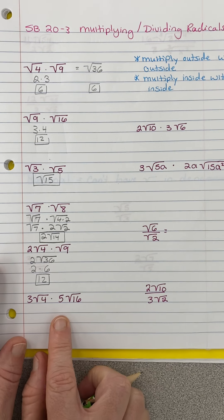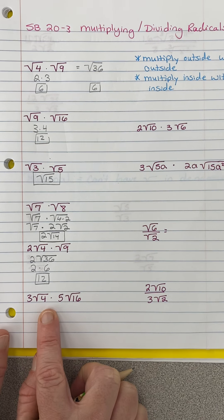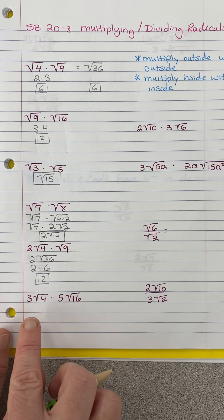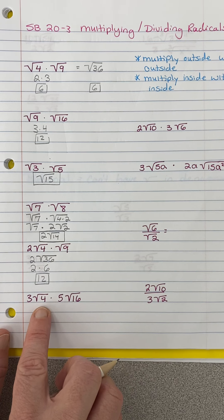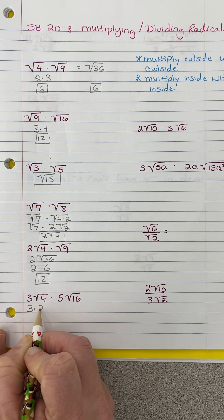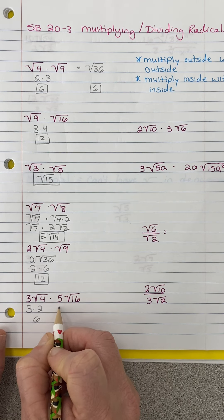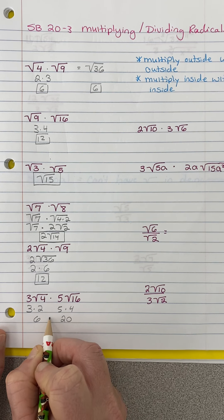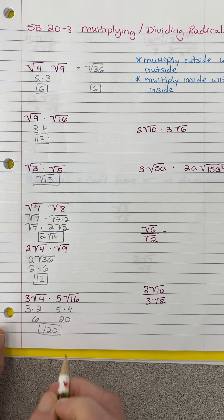I wanted to show you something like this — I keep doing perfect squares. Let's do this one a little differently. On the previous problem we multiplied first. On this problem we'll simplify first. The square root of 4 is 2, so 3 times 2 gets me 6. The square root of 16 is 4. 5 times 4 is 20. 6 times 20 is 120.